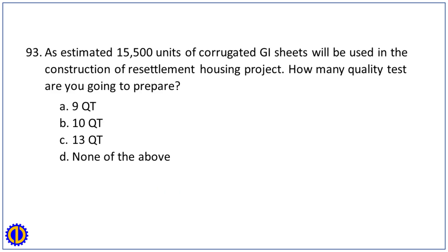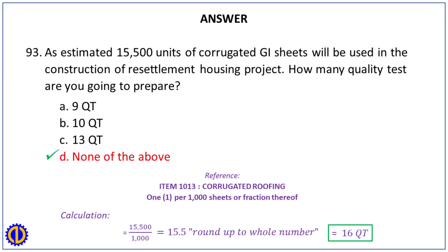Question 93. An estimated 15,500 units of corrugated GI sheets will be used in the construction of a resettlement housing project. How many quality tests are required? A. 9. B. 10. C. 13. D. None of the above. Answer: D. None of the above. Reference: Item 1013, Corrugated Roofing — 1 test per 1,000 sheets or fraction thereof. Calculation: 15,500 ÷ 1,000 = 15.5, rounded up = 16 quality tests.